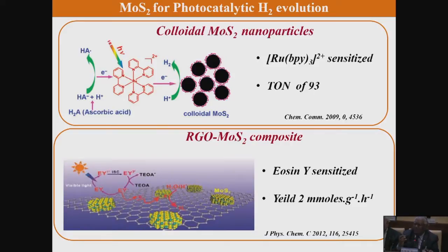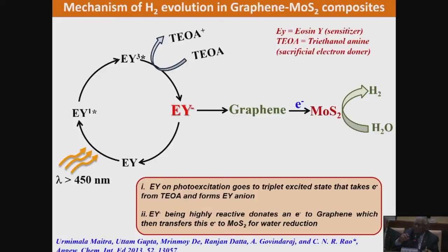Another strategy we have used is what is called dye-sensitized production of hydrogen. This is very interesting. Somebody took molybdenum sulfide small particles and found they produce hydrogen by splitting water very easily with reasonably high turnover numbers. What we do is take a dye like eosine, excite the electron to a triplet state, then give the triplet state an electron by using the right chemical — it becomes negatively charged. That eosine anion is very unstable and immediately loses that electron, giving it to graphene. Graphene here is essentially a medium, and eventually the reduction of protons occurs on molybdenum sulfide sheets, giving hydrogen.